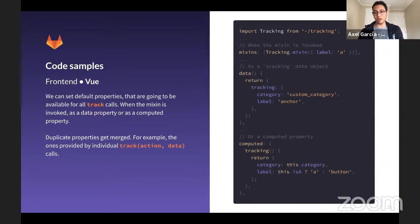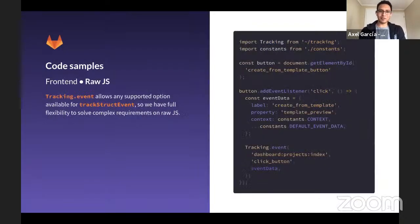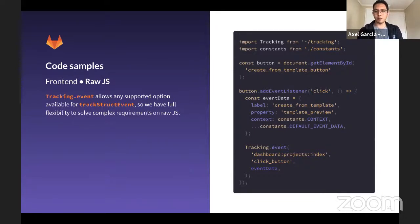All duplicated properties get merged using JavaScript's standard object merge strategy. The last front-end example uses raw JavaScript: we use tracking.event directly, which supports all the same options. We get a button, add an event listener to click events, declare the event data — getting label, property, and context from a constants file — and then fire the tracking event directly. All tracking methods on the front end are standardized on a single class.